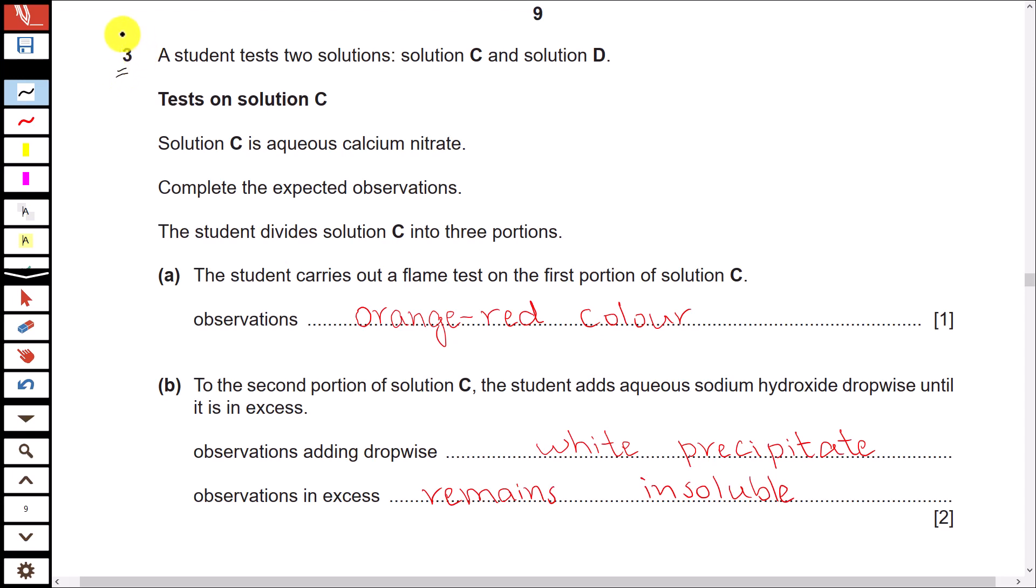Question number three. This question is about qualitative analysis. You have to look at tables for tests for cations, anions, gases, and flame tests, and these are provided to you at the end of this paper. Let's have a look.